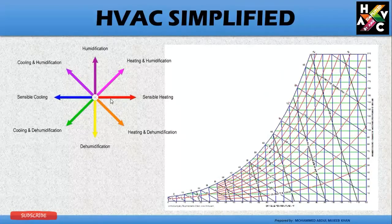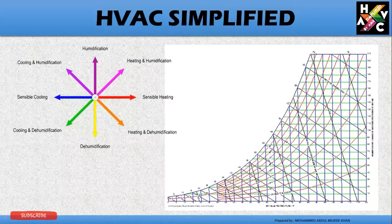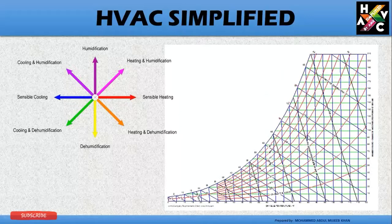The first thing we note on the psychrometric chart are the key processes: dehumidification, sensible heating, heating and humidification, sensible cooling, cooling and dehumidification, and cooling and humidification. When you go on the psychrometric chart from top to bottom on the left-hand side downwards, it is cooling and dehumidification.